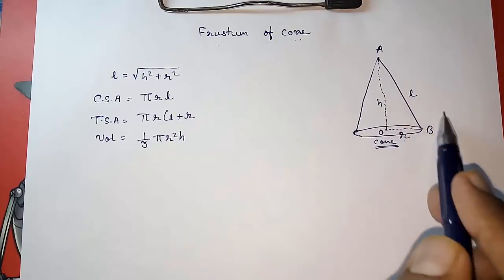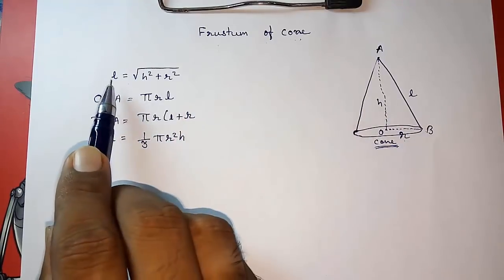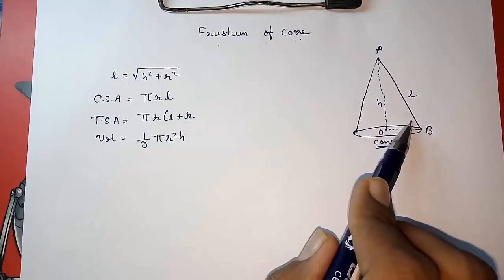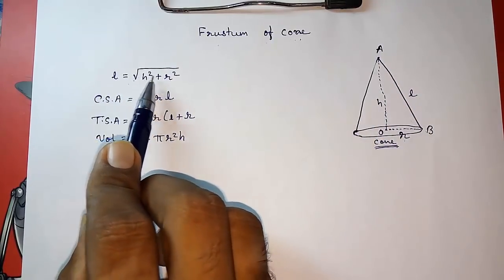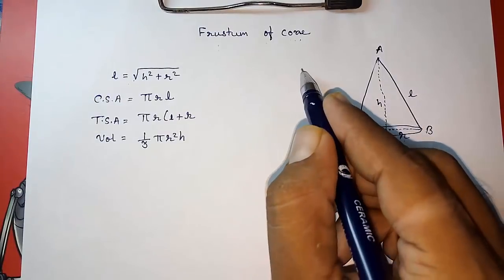You can see it is a right angle triangle, so by the use of Pythagoras theorem you can find any of these. If you want to find the slant height L, it is equal to under root h square plus r square.